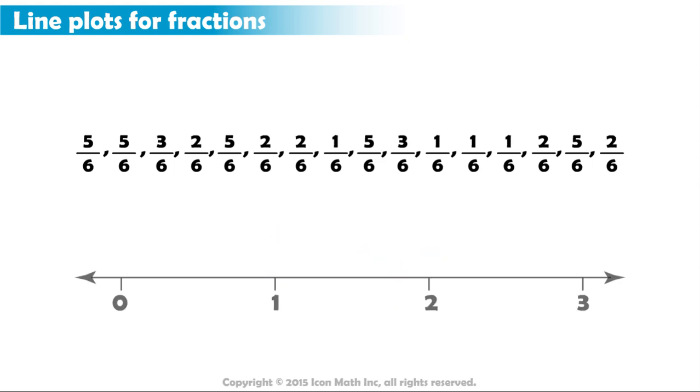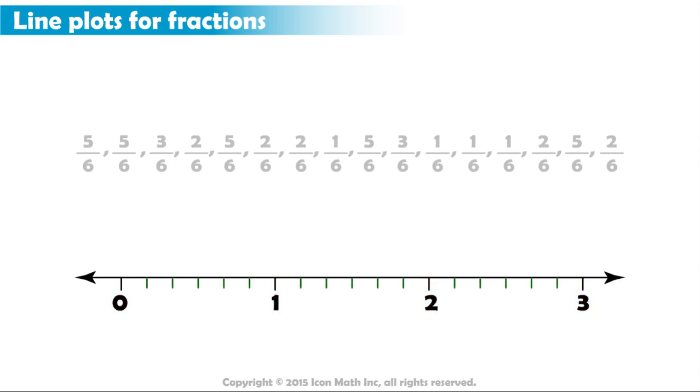First, we have to determine the scale on the number line. All the fractions have 6 as a denominator, which tells us how many equal parts of the whole we have. So, what does this mean on the number line? It means that the spaces between all the numbers have to be divided into 6 equal parts.